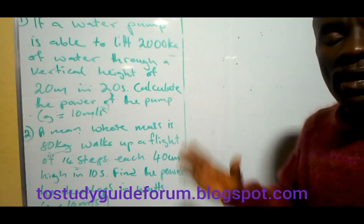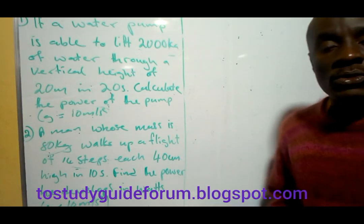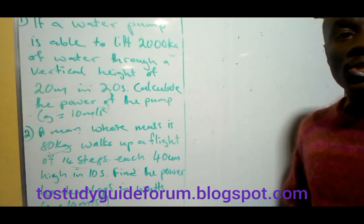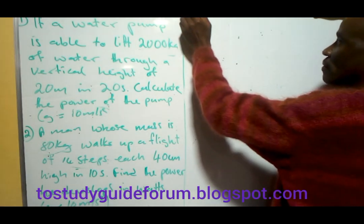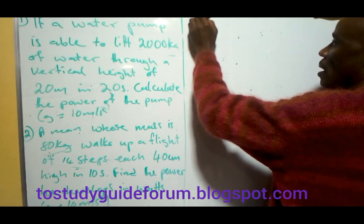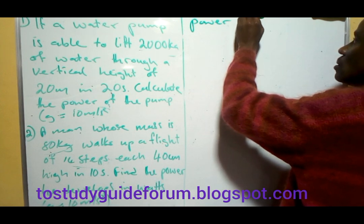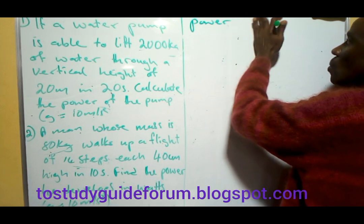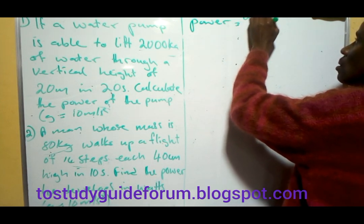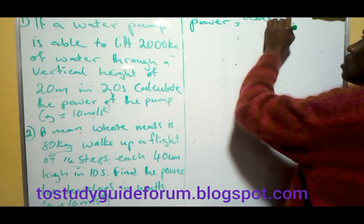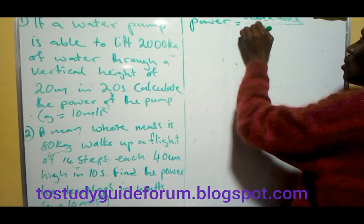We're looking at power. Power is the rate of doing work, and it's measured in watts. Since it's a rate of doing work, power equals work done over time.